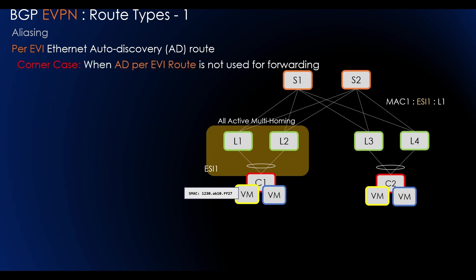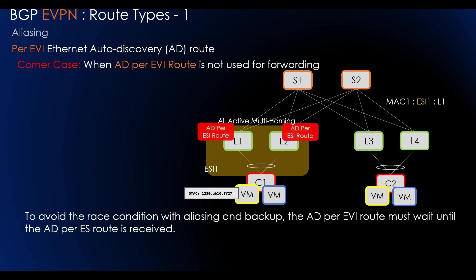There is a corner case when AD per EVI route is received by a remote PE before it receives the set of AD per ES routes. In order to handle this corner case, the Ethernet AD per EVI route must not be used for traffic forwarding. To avoid this race condition with aliasing and backup, the AD per EVI route must wait until the AD per ES route is received. This is all-active aliasing.